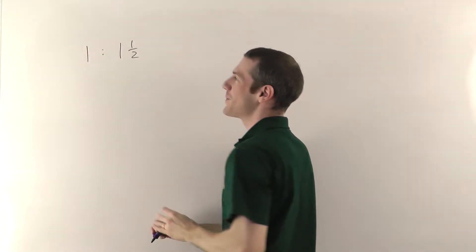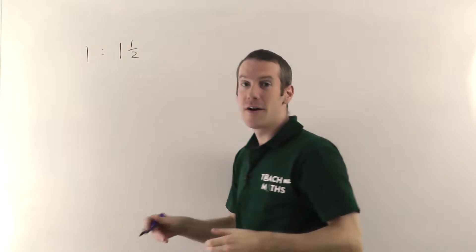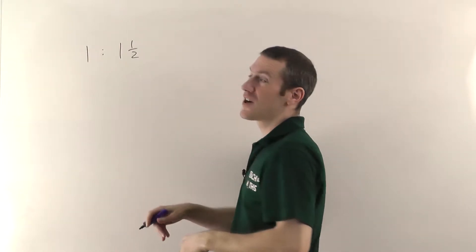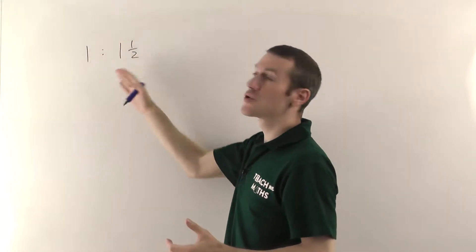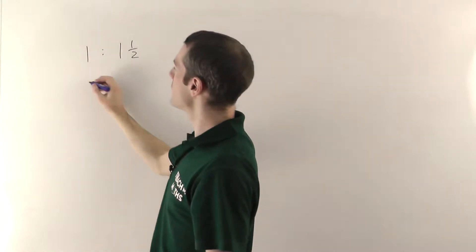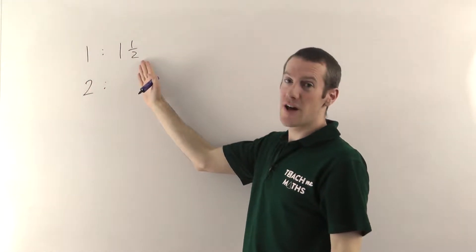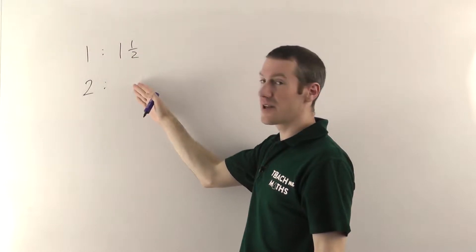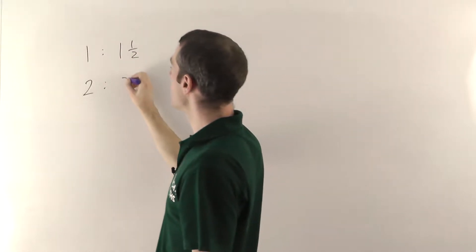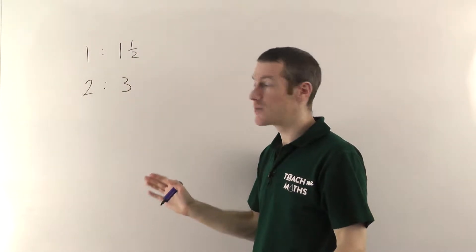So generally you'd use one cup of rice per person. So if I wanted to make enough rice for two people I need to use twice as much. So I would have two cups of rice and if it's one and a half parts of water for one person I double it. Two lots of one and a half will give me three cups of water for two people.